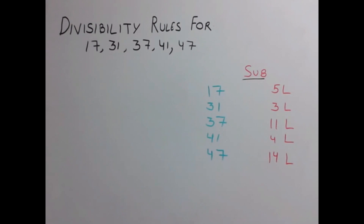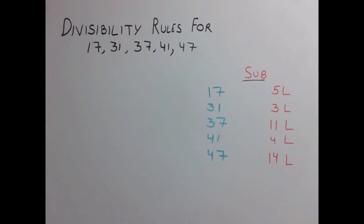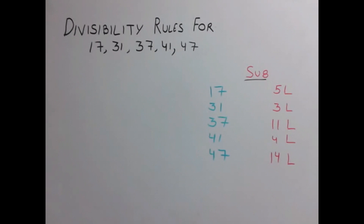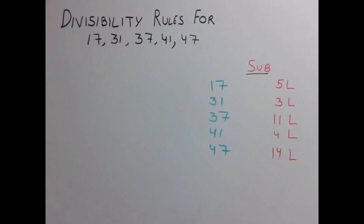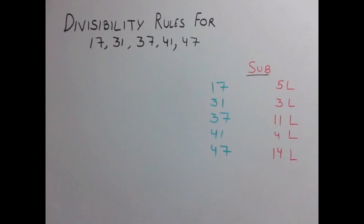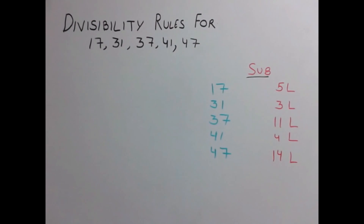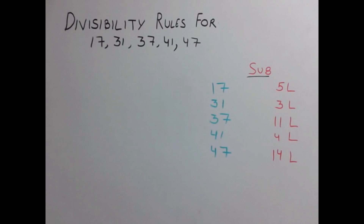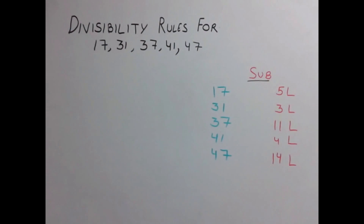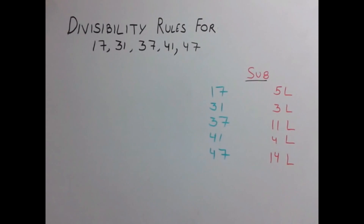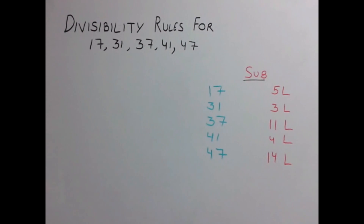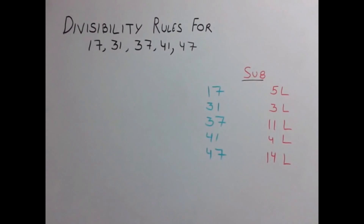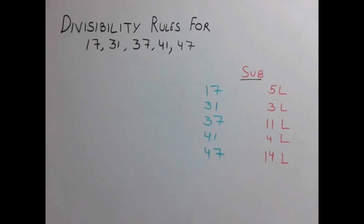Welcome again to NJGU Tutorials. In the previous class we discussed divisibility rules about various numbers. Today we will be discussing another set of numbers: 17, 31, 37, 41, and 47.